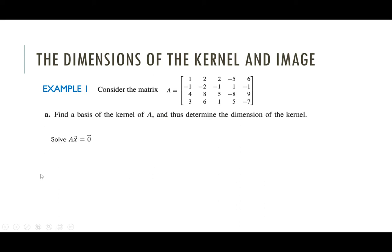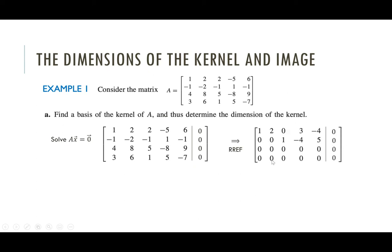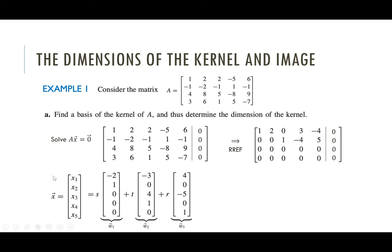To find the kernel we solve the system Ax = 0. We find the reduced row echelon form, translate back into equations, solve for the leading variables, make free variables parameters, and separate out. We end up with x equal to a linear combination with three parameters — because there are three free variables. So the kernel is the span of these three vectors, which we'll call w1, w2, and w3.